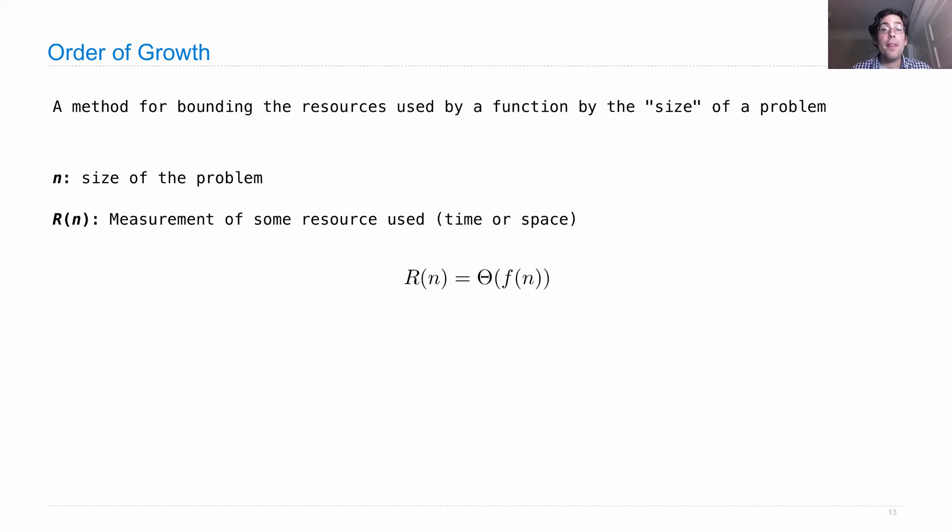We write the following: The resources used for a problem of size n is big theta of some function of n. What that means is that there are positive constants k1 and k2 such that the actual resources used for a problem of size n is larger than k1 times f(n) and smaller than k2 times f(n), for some sufficiently large value of n.